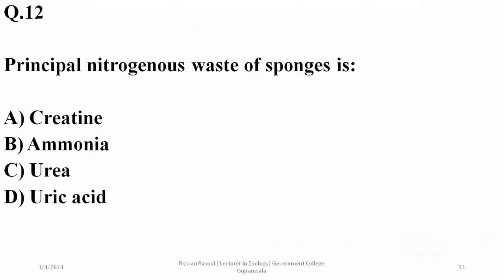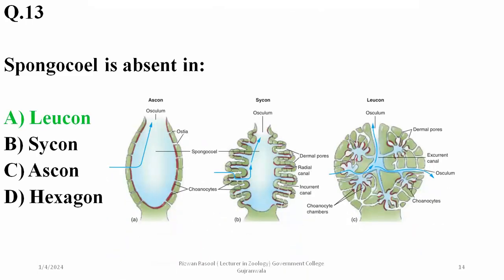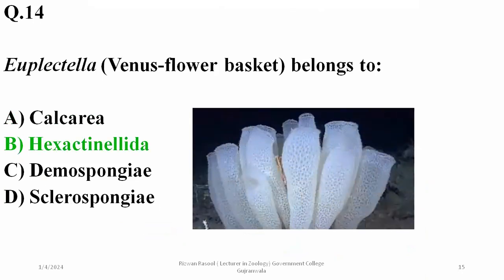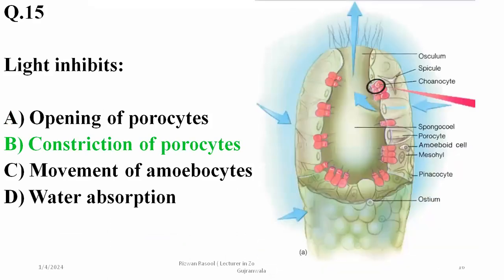The principal nitrogenous waste of the sponge is ammonia, as they live in abundant water supply. Spongocoel is absent in leuconoid body forms because their completely branched systems led to the absence of the spongocoel cavity. The Venus flower basket is Hexactinellida. Light inhibits constriction of the porocytes and hence increases the opening of the porocytes, leading to more influx of water — so during the day, sponges filter more water compared to in the absence of light.